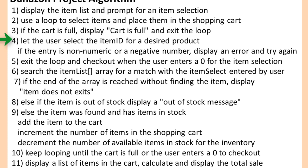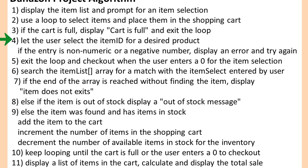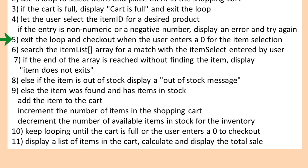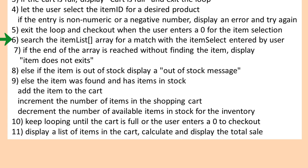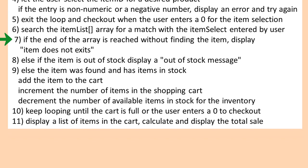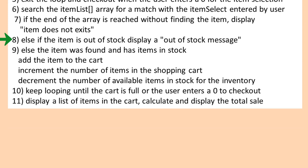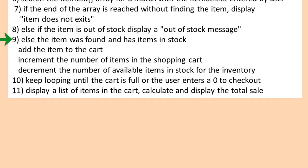If the cart is full, display cart is full and exit the loop. Step 4: Let the user select the item ID for a desired product. If the entry is non-numeric or a negative number, display an error and try again. Step 5: Exit the loop and check out when the user enters a 0 for item selection. Step 6: Search the item list array for a match with the item selected by the user. Step 7: If the end of the array is reached without finding the item, display item does not exist. Step 8: Else, if the item is out of stock, display out of stock message. Step 9: Else, the item was found and has items in stock — add the item to the cart, increment the number of items in the shopping cart, and decrement the number of items available in stock. Step 10: Keep looping until the cart is full or the user enters a 0 to check out. Step 11: Display a list of items in the cart, calculate and display the total sale.